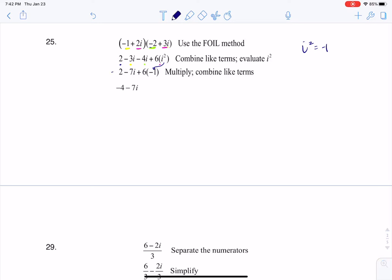All right, so if I wanted to have like an intermediate step before I got here, this would technically be 2 minus 7i minus 6, and the like terms are 2 and minus 6. So 2 minus 6 is negative 4, and my answer is negative 4 minus 7i.